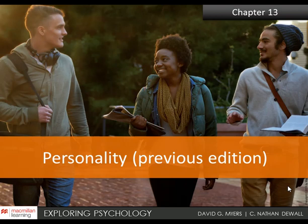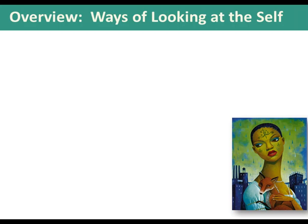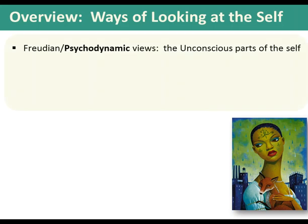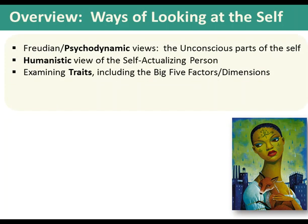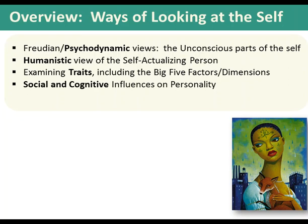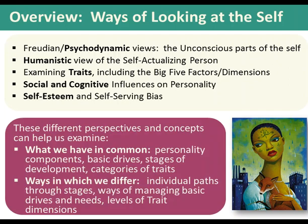Welcome back class. Let's begin our discussion of chapter 13 on personality. We'll be reviewing several theories and approaches to the self: Freudian psychodynamic views, the unconscious parts of the self, humanistic view of the self-actualizing person, examining traits including the Big Five factors, social and cognitive influences on personality, self-esteem, and self-serving bias.